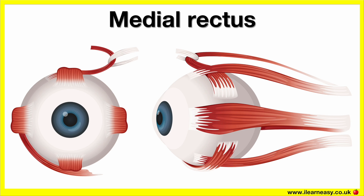Medial rectus. The origin of the medial rectus is the common tendinous ring. The insertion of the medial rectus is the medial part of the sclera. The actions of the medial rectus are that it abducts. This means it helps us to look inward. It's the most powerful inward mover.